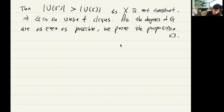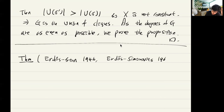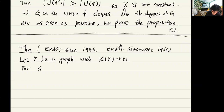What about other graphs? For other graphs, we know the following theorem: the Erdős-Stone-Simonovits theorem. Let F be a graph with chromatic number r+1, and let r = χ(F) − 1.